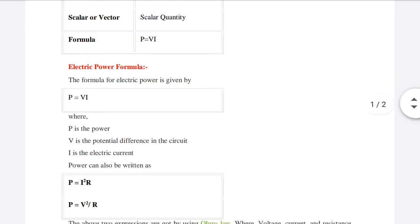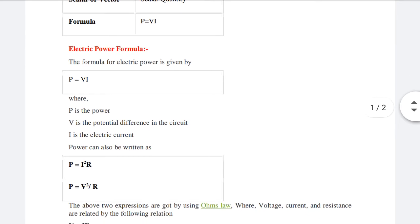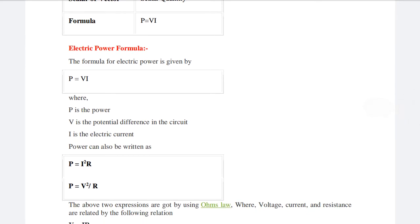In P equals to V into I, P is power, V is the potential difference in the circuit, and I is the electric current.